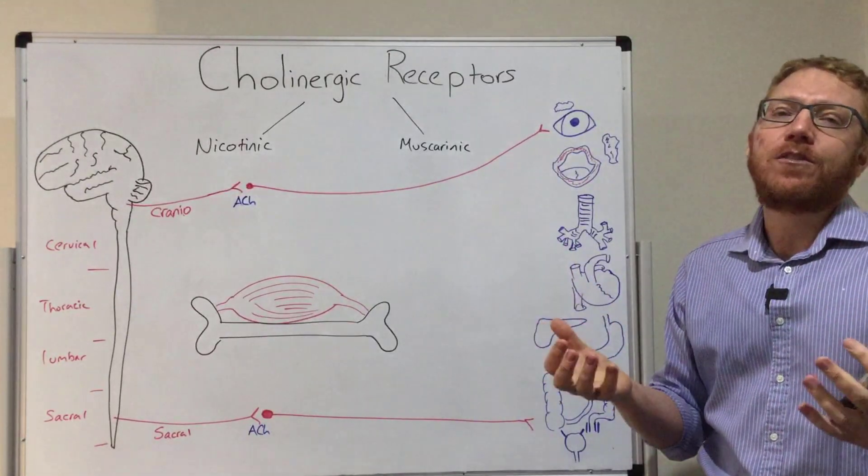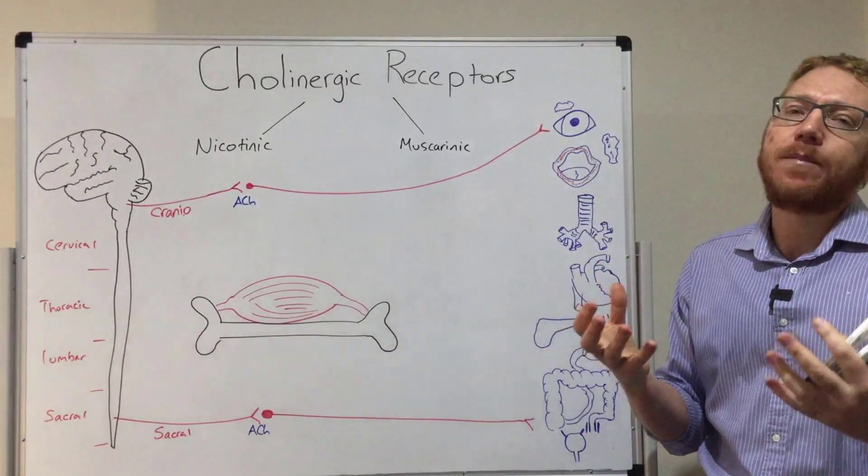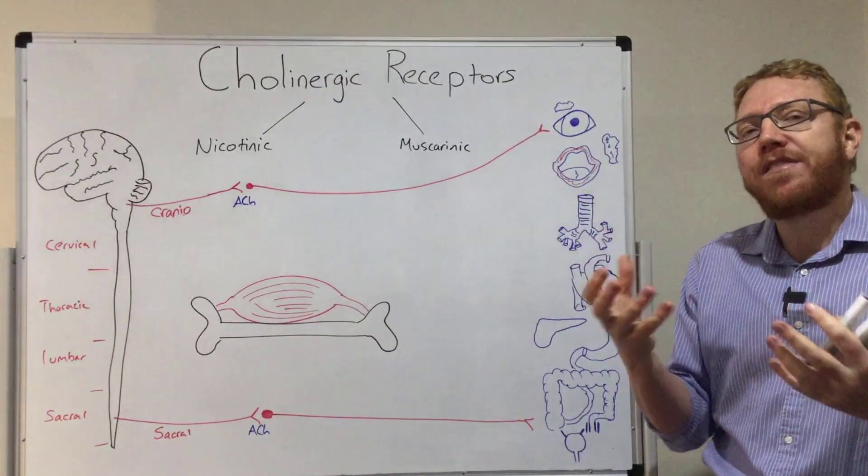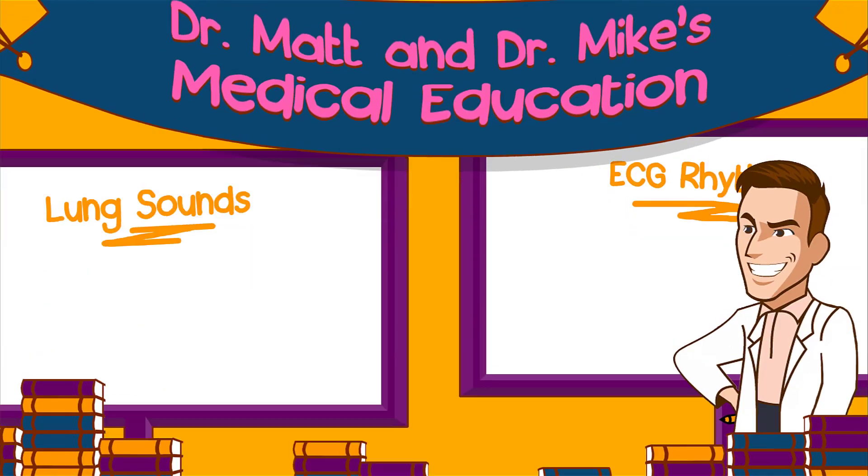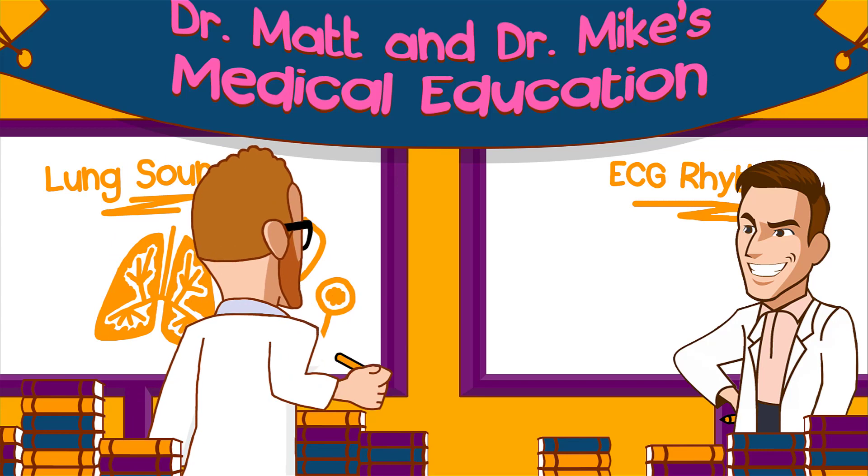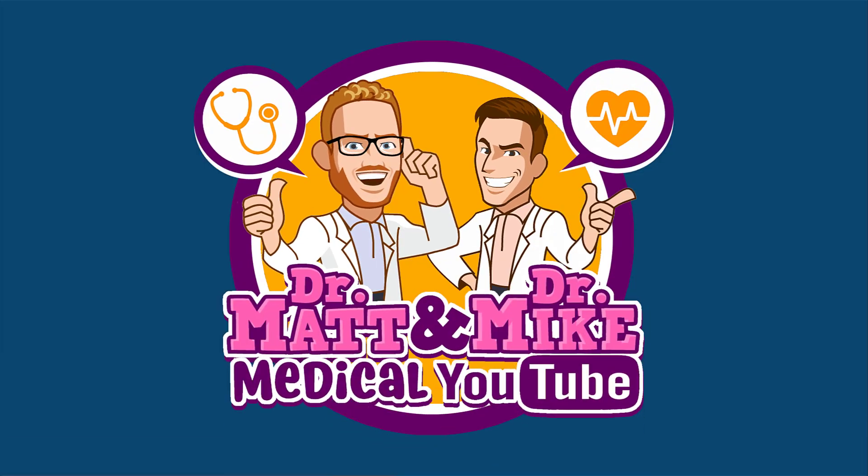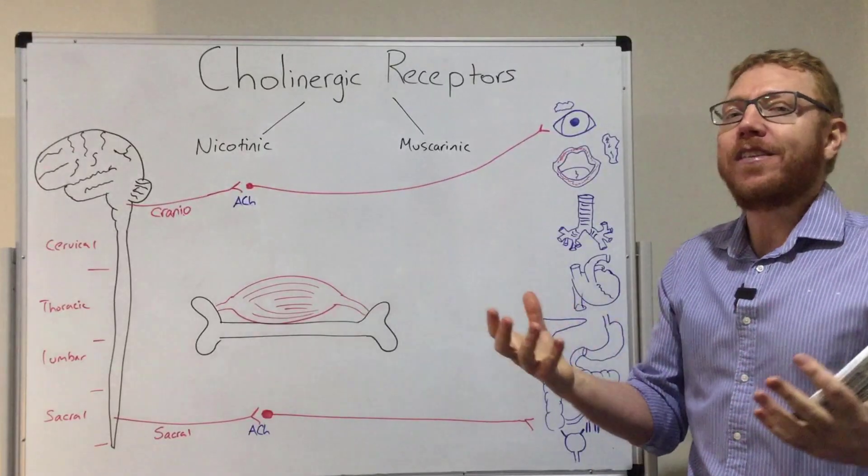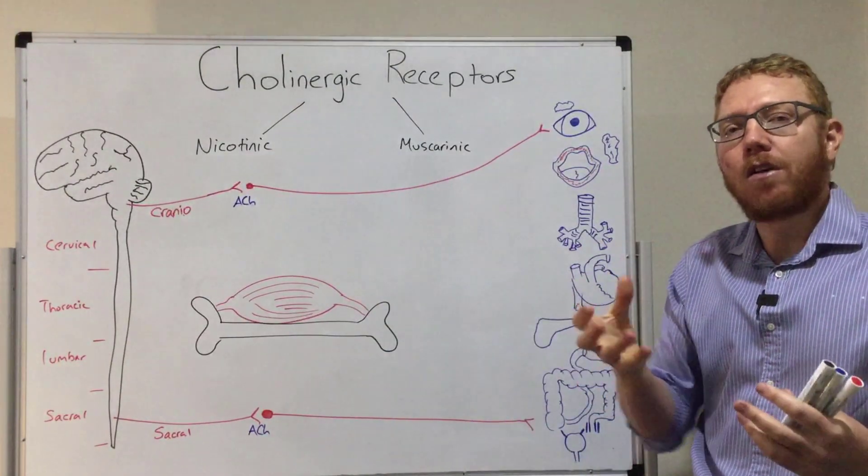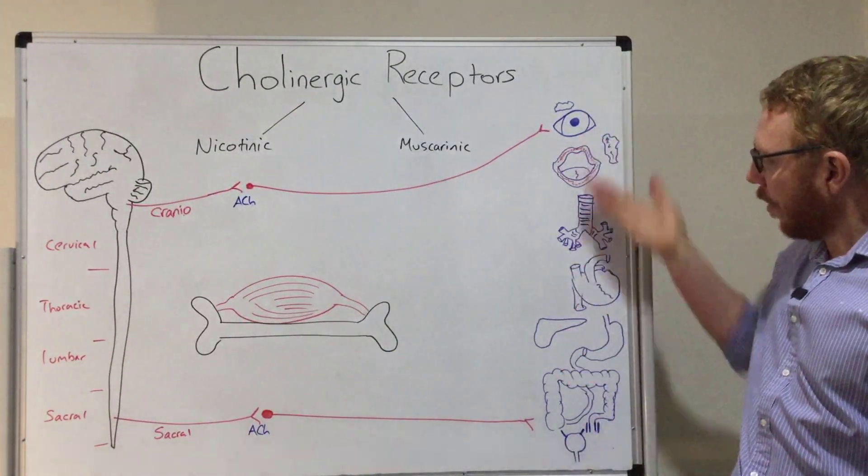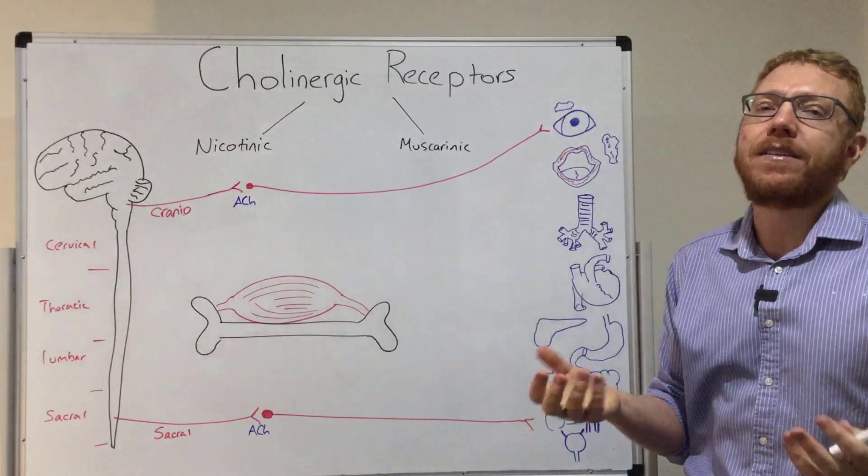Welcome to this short lecture on cholinergic receptors. In this lecture, we'll go through the subtypes of cholinergic receptors, where they're located in the body, and what effects you will see when you stimulate these receptors. The learning outcomes are what are the subtypes of cholinergic receptors, where they're located in the body, and if you stimulate them, what physiological effects will you expect to see.